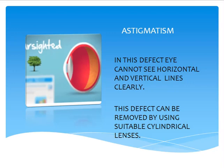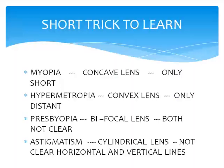Now, this is a trick to remember these four defects. For myopia — the person can only see short distances. The corrective lens is a concave lens. Only short distance is visible in myopia.